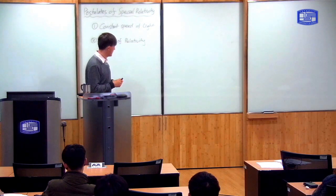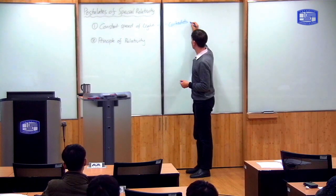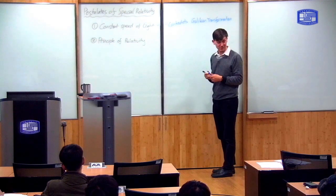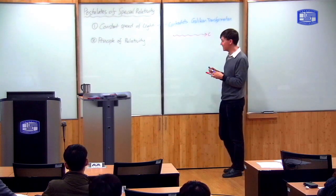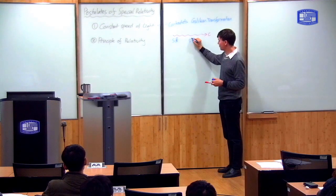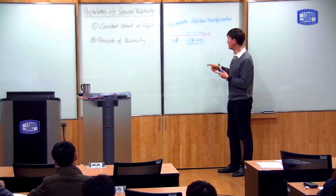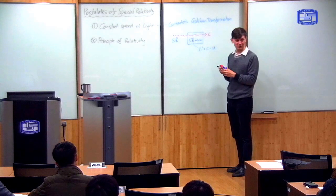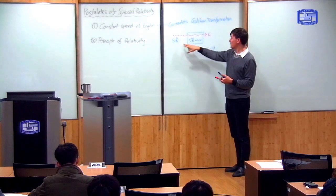The thing I said at the very end of last time is that the constant speed of light contradicts the Galilean transformation of velocities. The reason is very simple to understand. Suppose I'm looking at a beam of light traveling with speed C relative to an observer at rest in this reference frame. If I take a second observer, S prime, traveling with velocity U, who also measures the speed of light, then according to the Galilean transformation, the speed that this observer measures, C prime, should be equal to C minus U. That's what the Galilean transformation says, but the constant speed of light says this is not the case — both observers should measure the same speed, C.